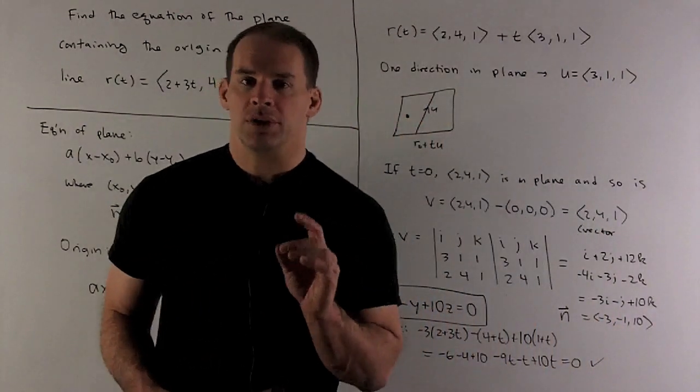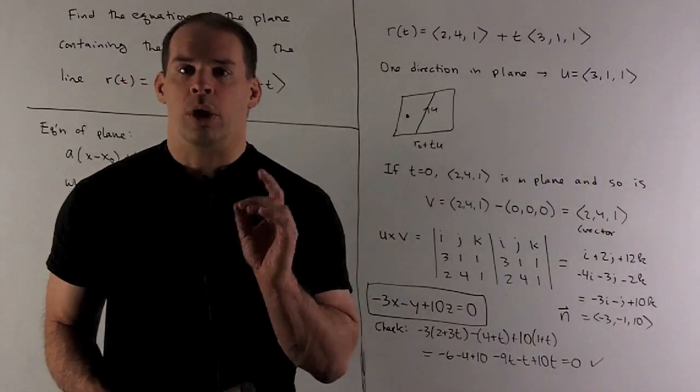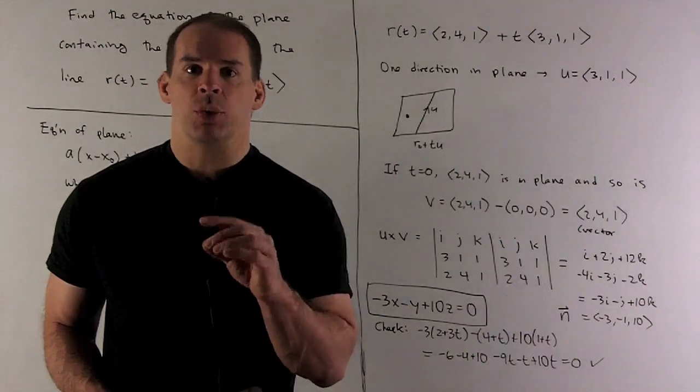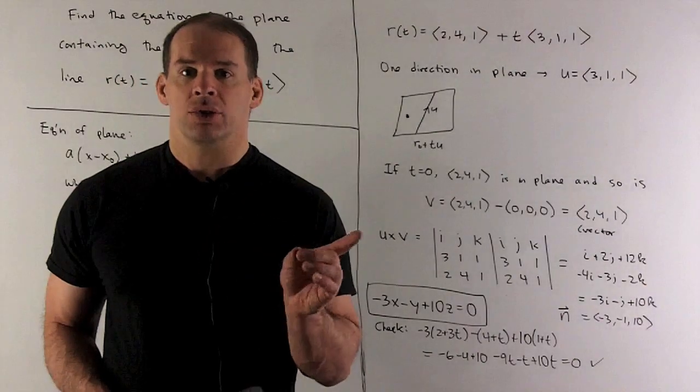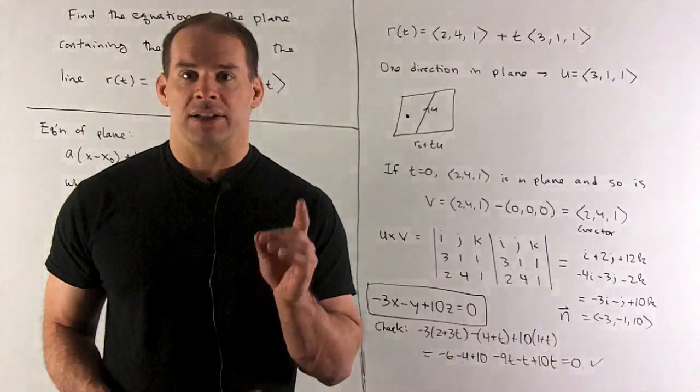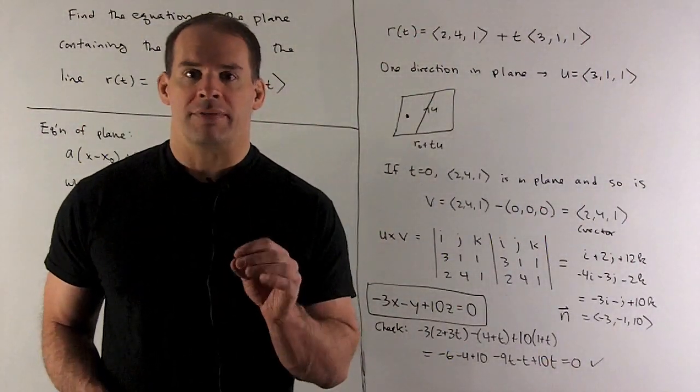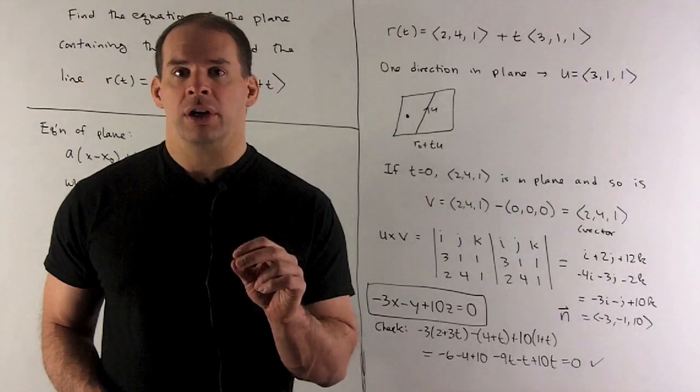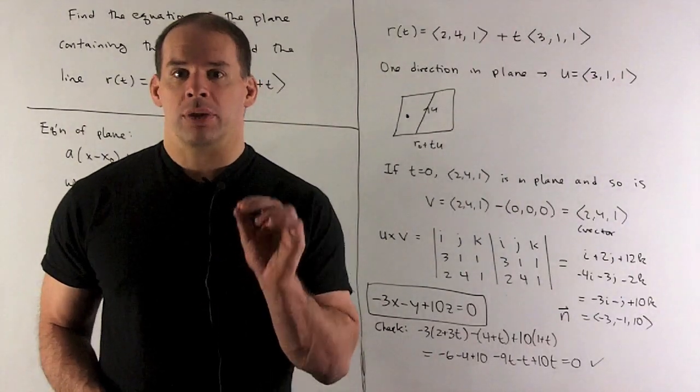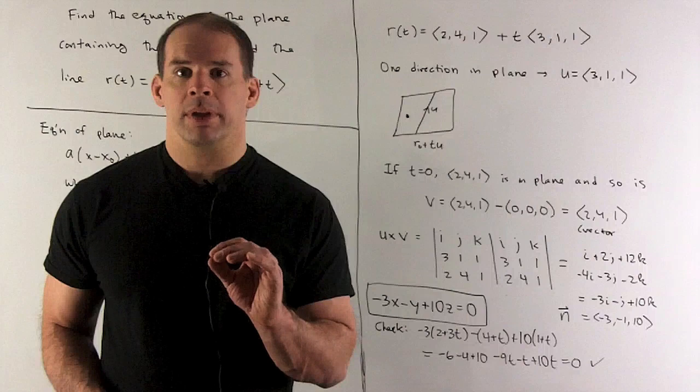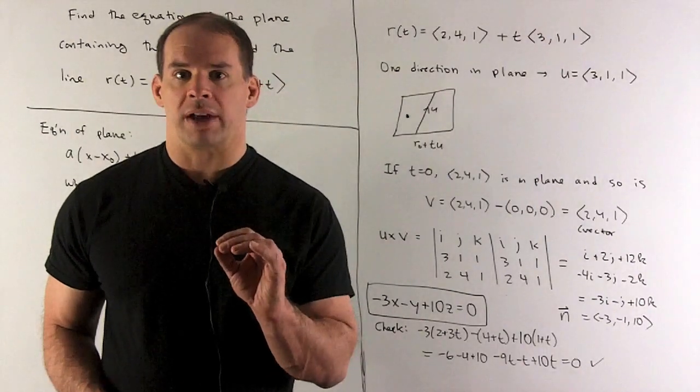Now, to do that, I have one point in the plane. If I find two other points, we can create two vectors, and then I can take the cross product. If I have two vectors and I want to create a vector that's perpendicular to both, the cross product does that for me. So that's how I find my normal vector.